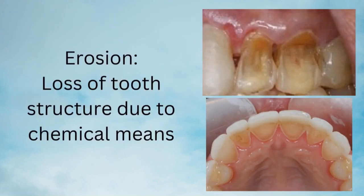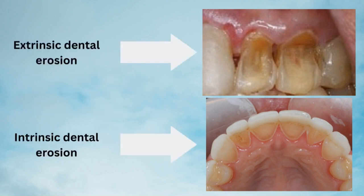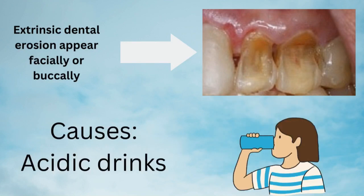Next is erosion, which is defined as loss of tooth structure due to chemical means, not mechanical like abrasion or abfraction. We have two types of erosion: extrinsic and intrinsic. Extrinsic erosion appears facially or buccally, and the cause is drinking acidic drinks or eating acidic food like lemon.